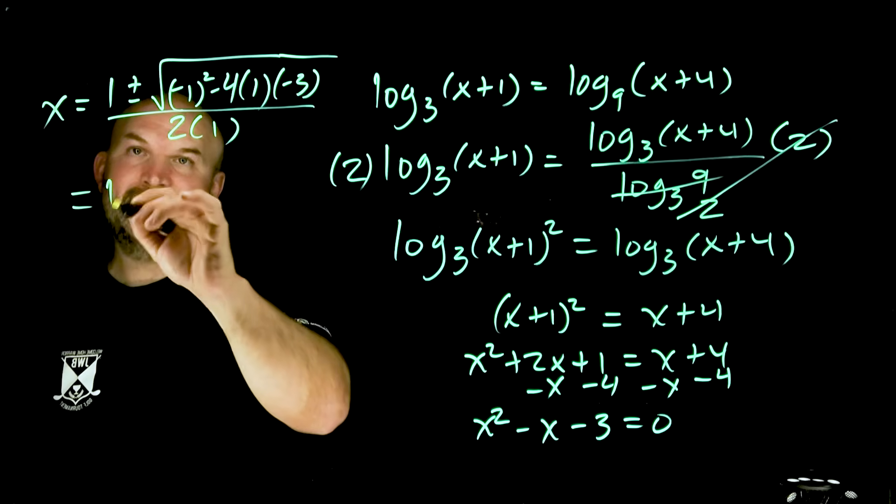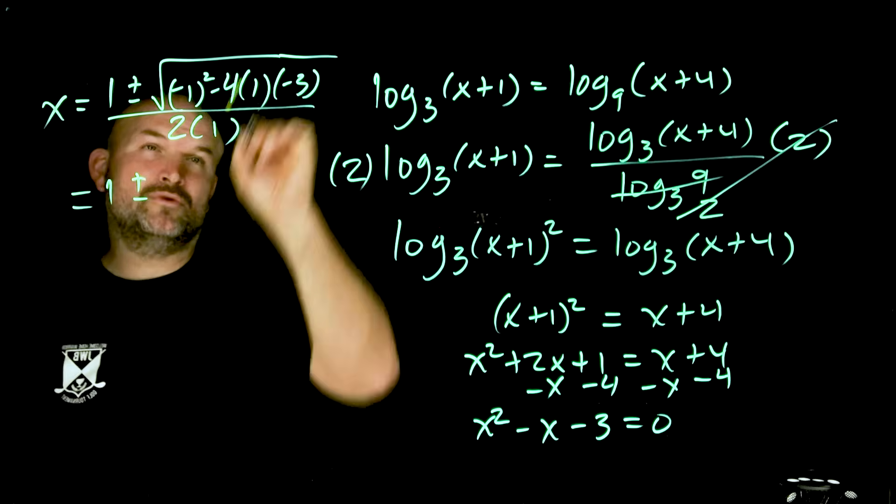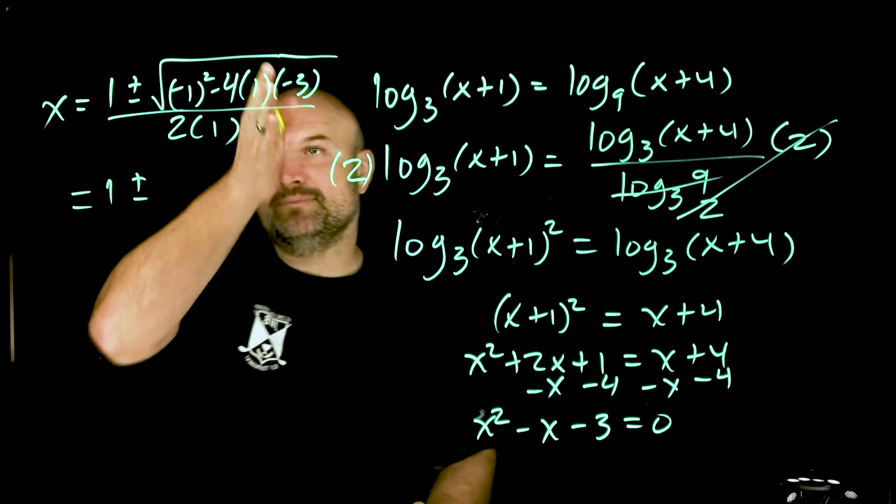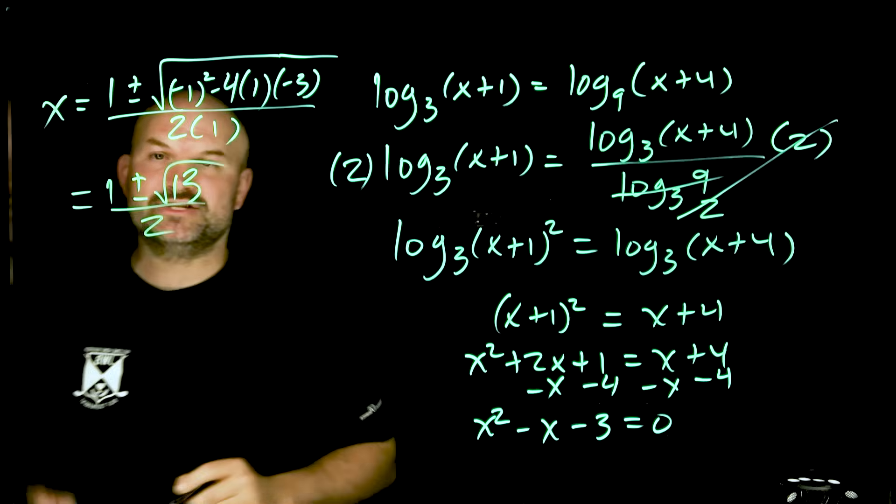So I can now just go ahead and simplify here. Negative 1 squared is going to be a positive 1. Negative 4 times negative 3 is going to be a positive 12. 1 plus 12 is going to be a 13, and that's going to be all divided by 2.